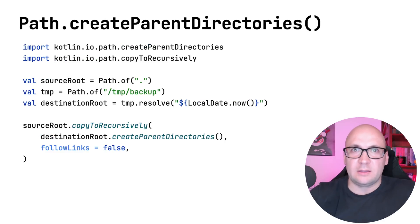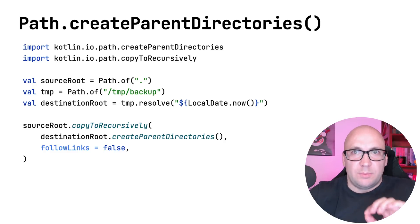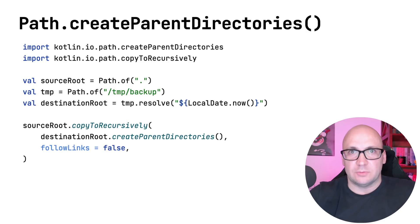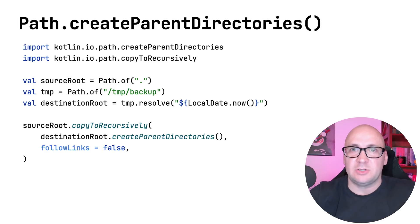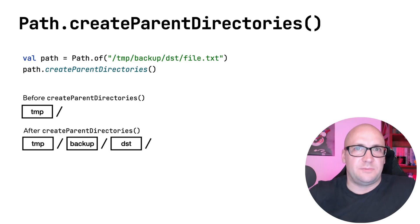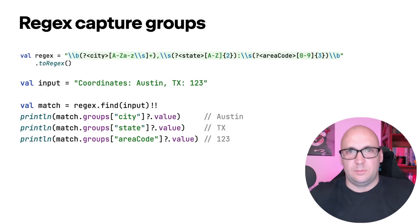In this release, a new extension function createParentDirectories was added that you can use to create a new file along with the required path. When you provide a file to this function, it checks if the parent directories already exist; if they don't, the function creates the missing directories. This function may come in handy in combination with the copyToRecursively function, which is still marked as experimental. It behaves the same way whether the path points to a file or a folder.